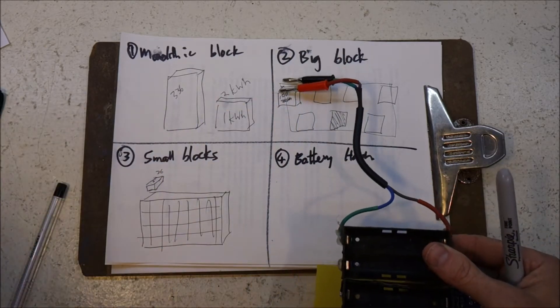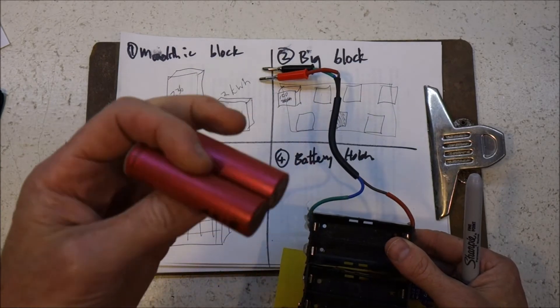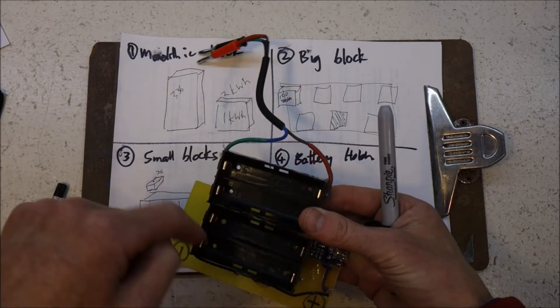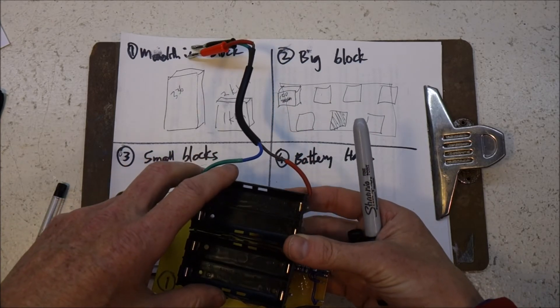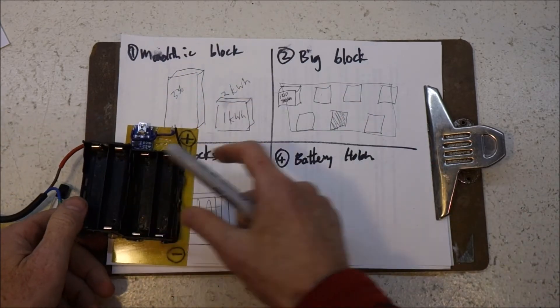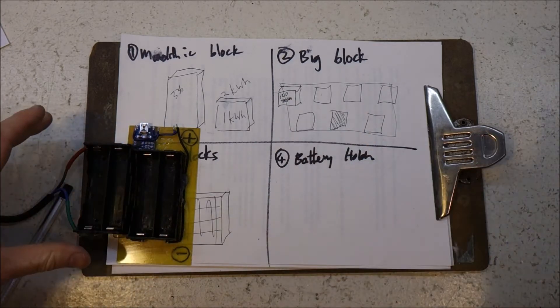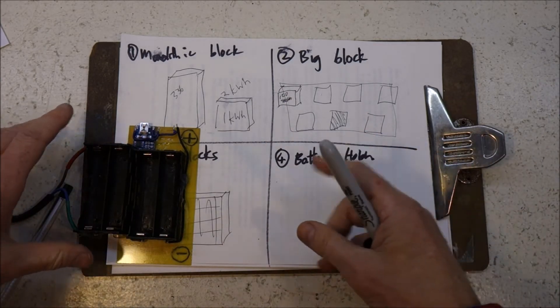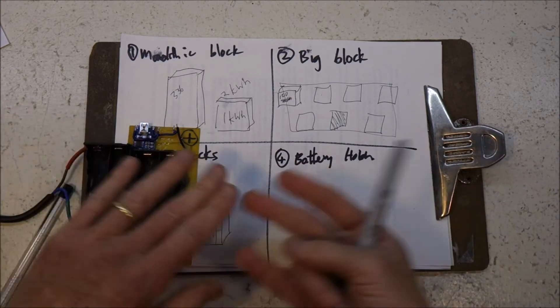That would only require 42 four-way battery holders, which you could string along and make a 2kWh power shelf. Not a powerwall, but a power shelf.